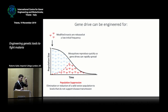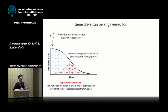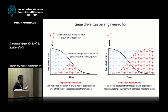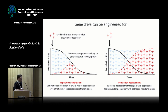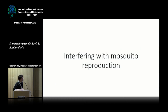Gene drives can be classified in two different types. The first aims at population suppression: when you release these modified insects, they are meant to spread in a population and at the same time reduce the fertility or reproduction capacity of that population and crash it. The second approach is population replacement — this genetic element is meant to spread in a population carrying something that makes the mosquito resistant to the parasite. These are usually linked to anti-parasite molecules, and there are some proof-of-principle studies of this technology already out there.